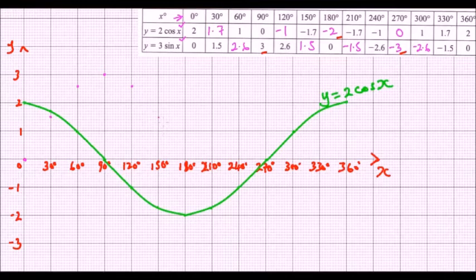When it is 180, y is 0. So that's our point. When it is 210, y is minus 1.5. So minus 1.5 there. 240, it is minus 2.6. So minus 2.6 should be there. When 270, it is minus 3. So we have a point there. 300, it is minus 2.6. We have 330, it is minus 1.5. 360, it is 0.